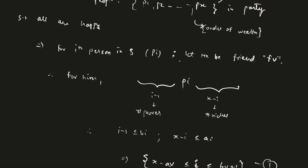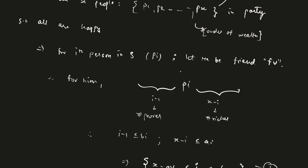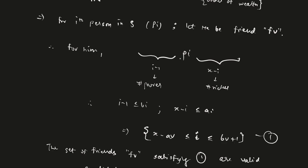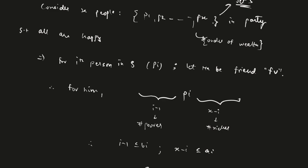So consider ith person in set S. Let's call him pi. So for the person pi, let his index in the original array, original friends array f1 to fn be v. So for ith person, by the way we have defined the set px, the set S...